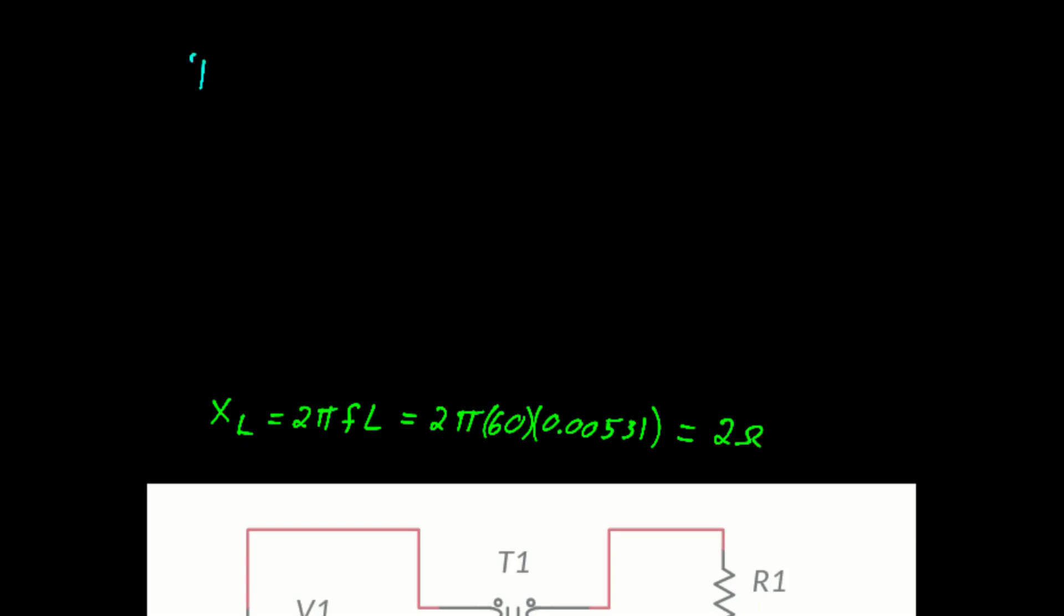We'll review the rules for an ideal transformer before we get started. We know the turns ratio, which is defined as the number of turns in the primary over the number of turns in the secondary, is equal to the voltage ratio. And it's also equal to the current in the secondary over the current in the primary. Be careful because the current is upside down. Again, you see the secondaries on the top and the primaries on the bottom.